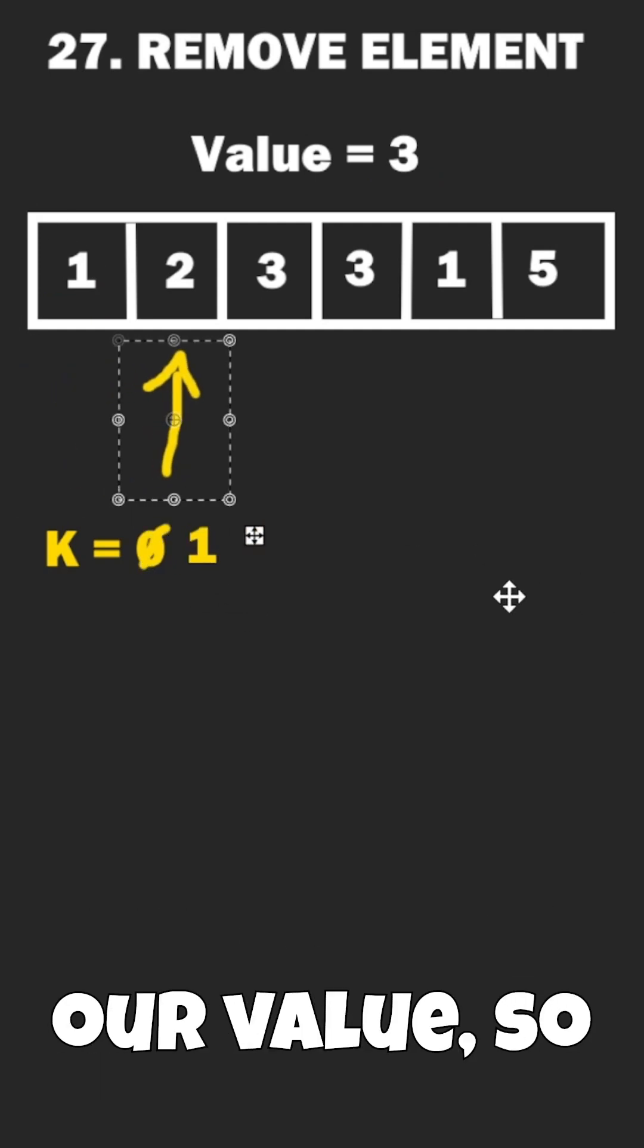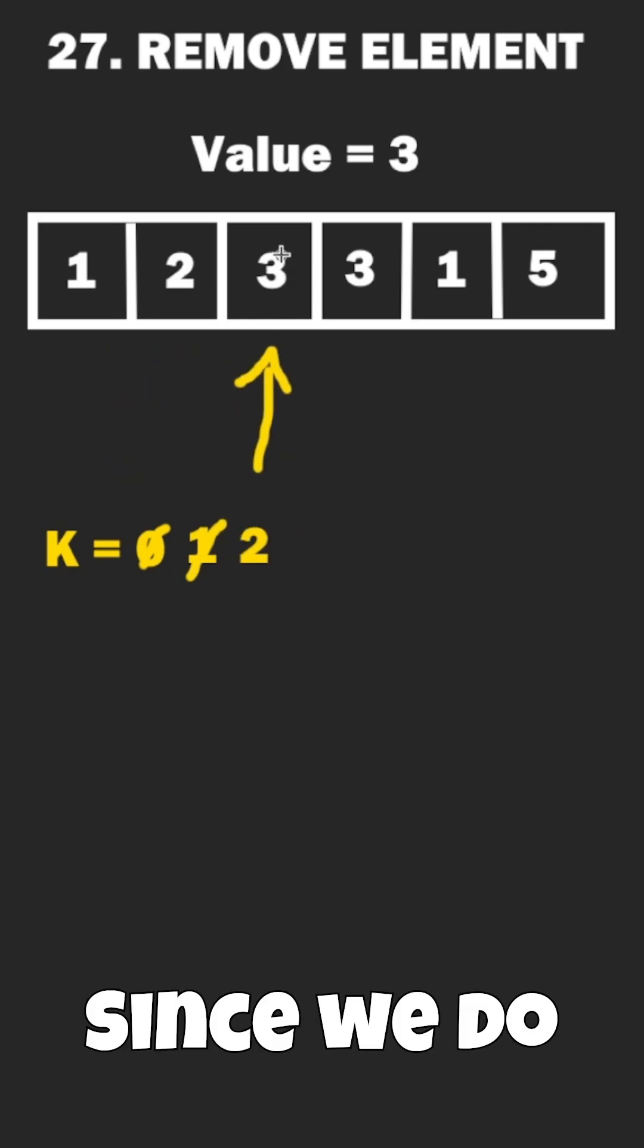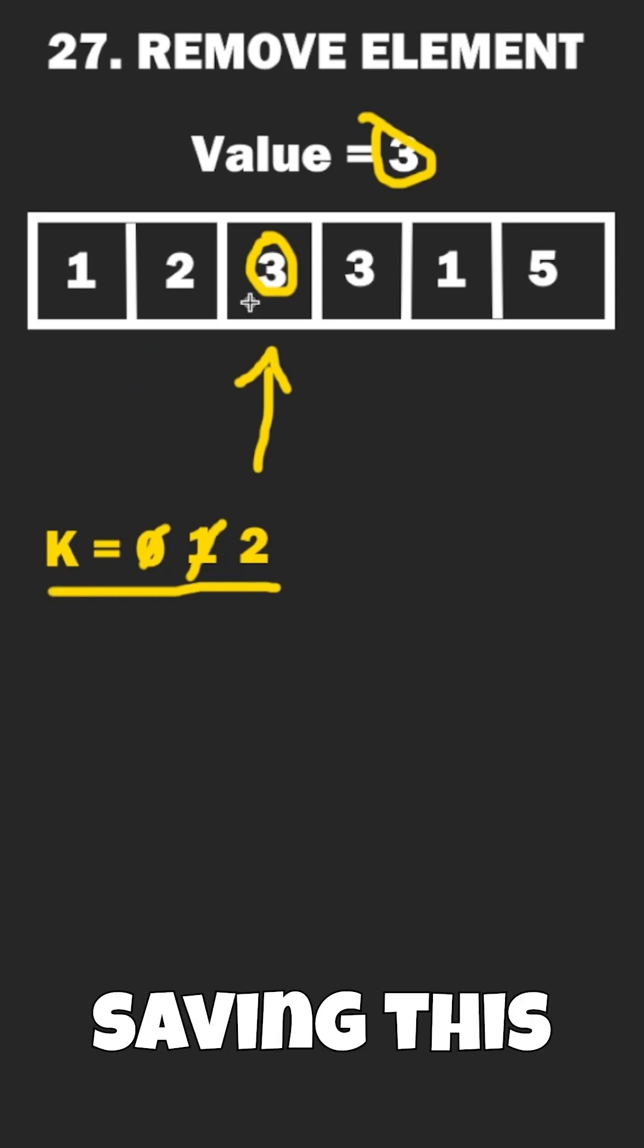The first two integers are not equal to our value, so you won't really see any change. However, when we get to the third integer, since we do not increment k, we are essentially saving this position.